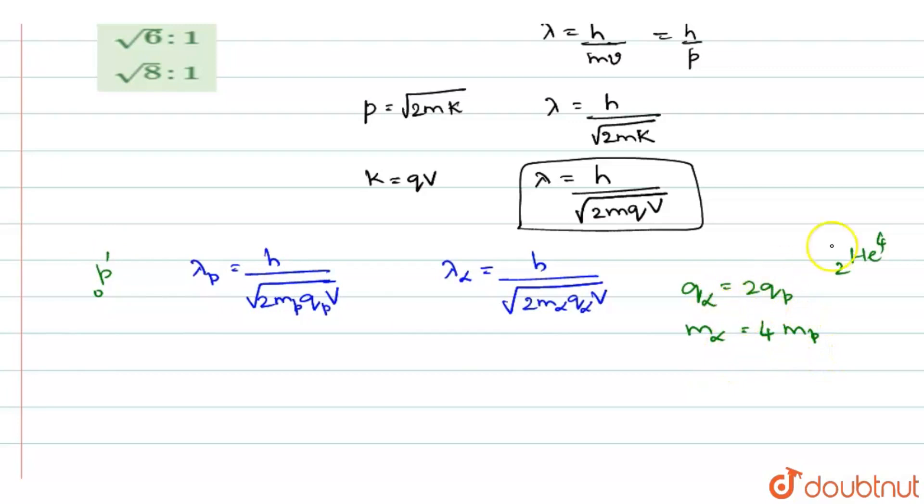Now when you substitute these two things here, lambda alpha becomes h divided by root of 2 into m alpha, substitute as 4mp, q alpha will be equal to 2qp into V.